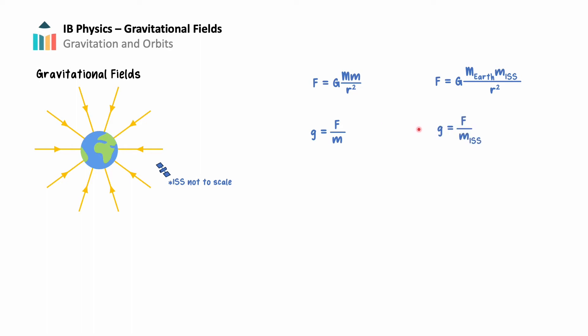If we put this in terms of the ISS, it becomes the gravitational field strength equals the gravitational force between the ISS and Earth divided by the mass of the ISS. Substituting Newton's law of gravitation for the force, we get lowercase g equals capital G times mass of the Earth times the mass of the ISS divided by R squared, and all of this is divided by the mass of the ISS. The mass of the ISS cancels out, and we see that the gravitational field equals capital G times the mass of the Earth divided by the distance squared.